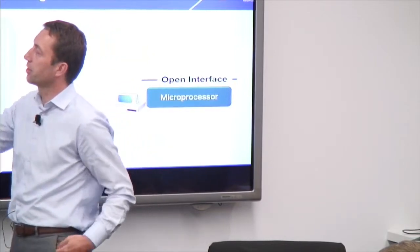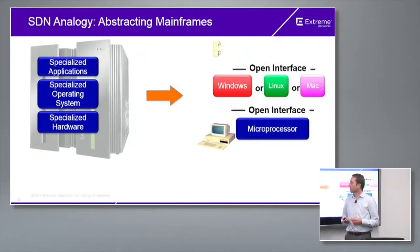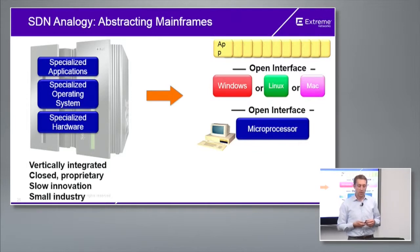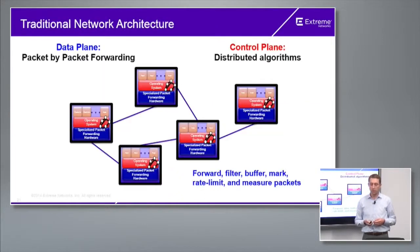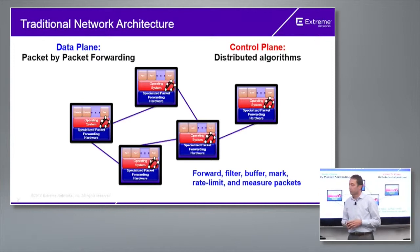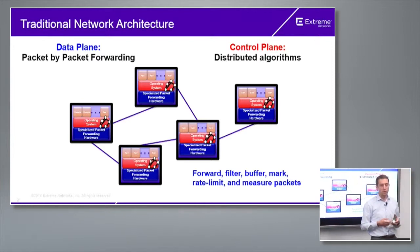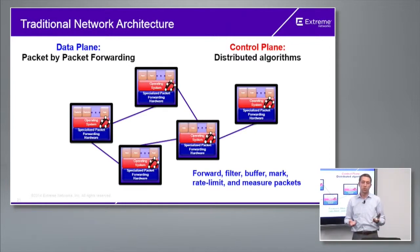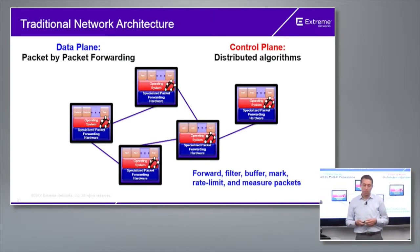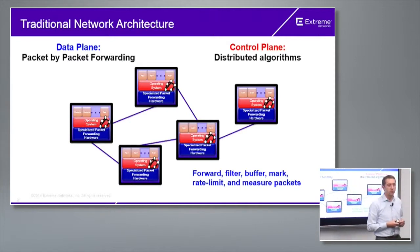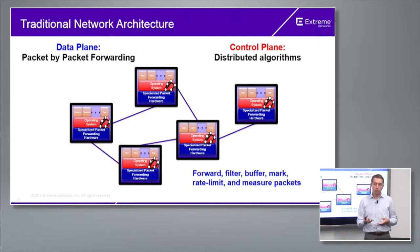Looking back at what happened at the mainframe level — a monolithic architecture that was decomposed over time through hardware, the operating system, and the application — similarly, that will happen to the network over time as SDN technologies get introduced and used more. Traditionally, the network is a distributed architecture with a distributed control plane running routing protocols and spanning tree. Forwarding is packet-by-packet, so there's no real notion of a flow, which is important as policies can be applied more granularly to application flows.